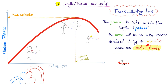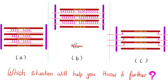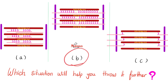Can you answer which scenario — A, B, or C — will help you throw the arrow further? The answer is B. At that position you have the greatest number of cross-bridges between myosin and actin. At A, with no stretch, actin actually overlaps itself, giving fewer cross-bridges. At the other extreme, if stretched too far, actin and myosin are no longer touching. Everything is good within limits — that's why B is best. You want actin fibers close enough that the H zone disappears.